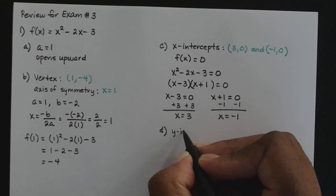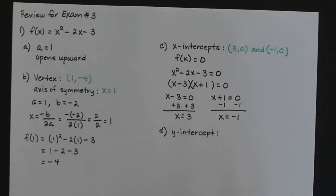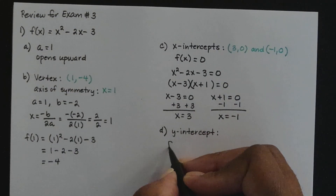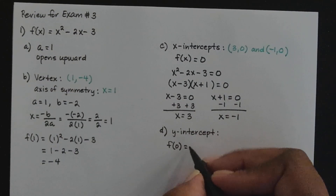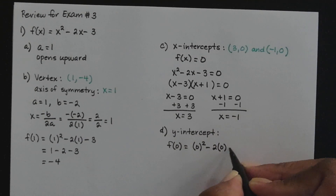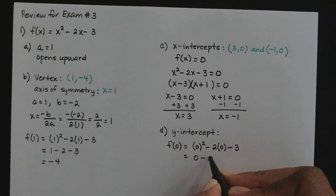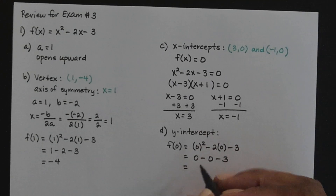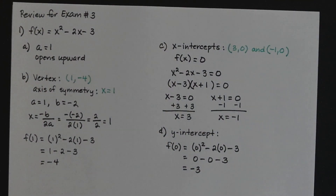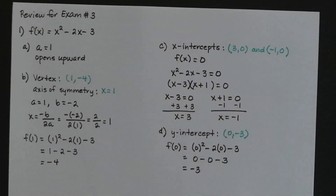Part d is finding the y-intercept. When you find the y-intercept, you substitute 0 for every x in the function. Evaluating f of 0: 0 squared minus 2 times 0 minus 3 equals 0 minus 0 minus 3, which is negative 3. So the y-intercept is the ordered pair 0, negative 3.